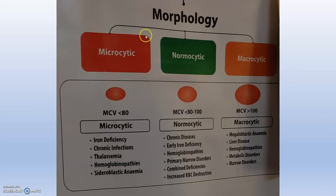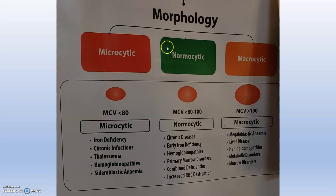Next is morphology. Anemia can be microcytic, normocytic, and macrocytic. In microcytic, the size will be decreased — MCV will be less than 80. In macrocytic, MCV will be greater than 100. Normocytic MCV will be between 80 to 100. Microcytic anemia can be due to iron deficiency, chronic infections, thalassemia, hemoglobinopathies, and sideroblastic anemia. Normocytic anemia occurs in chronic disease, early iron deficiency, hemoglobinopathies, combined deficiencies, etc. Macrocytic is associated with megaloblastic anemia, liver disease, etc.